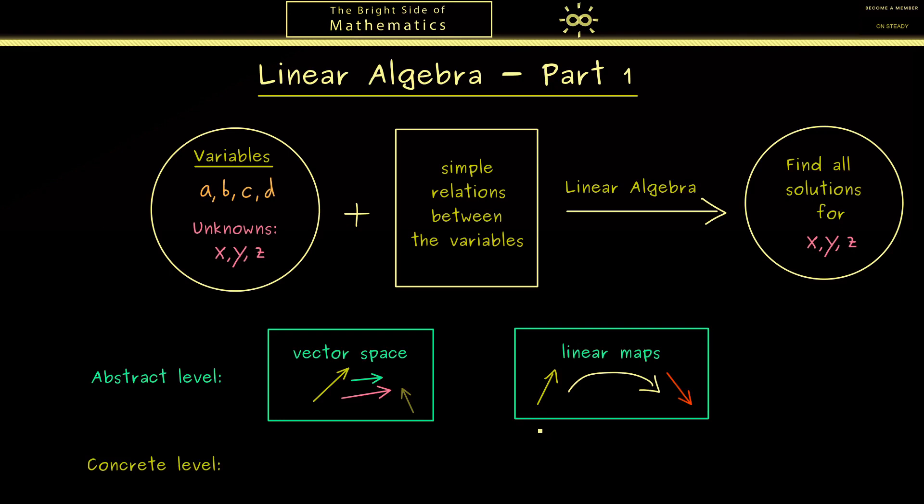Now please don't be deterred here. Of course we don't start at the abstract level. First we will consider a very concrete level. This means instead of an abstract vector space we start with something we can call R^n.